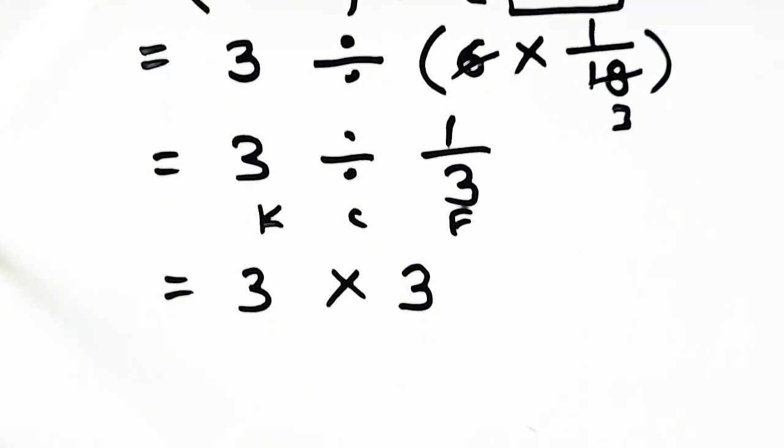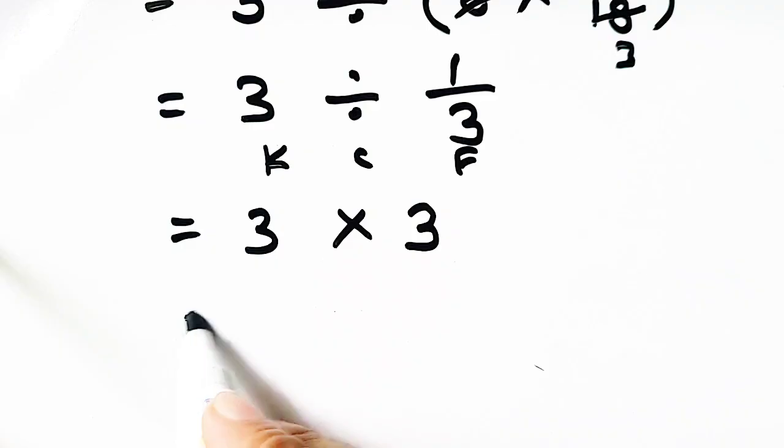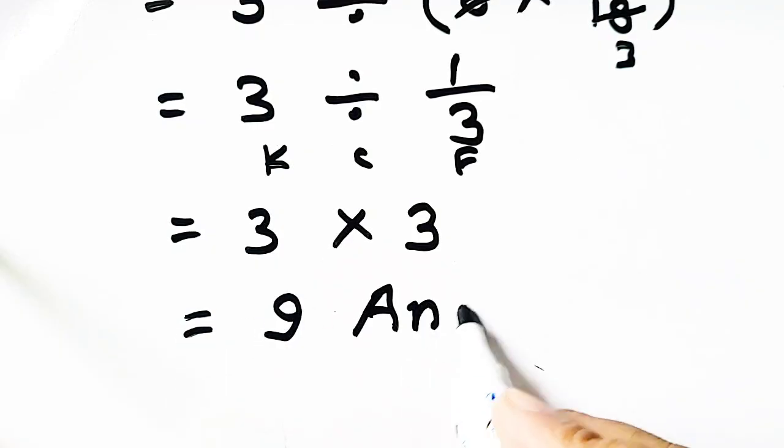3 times 3 is equal to 9, which will be our answer. Okay, thank you.